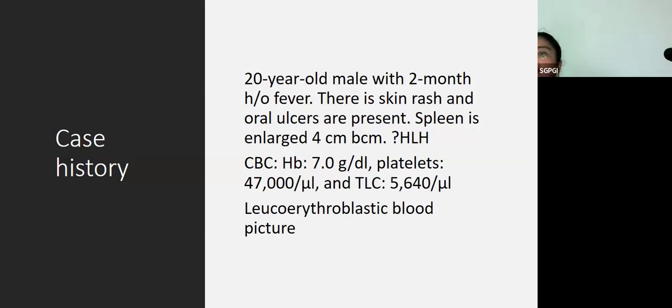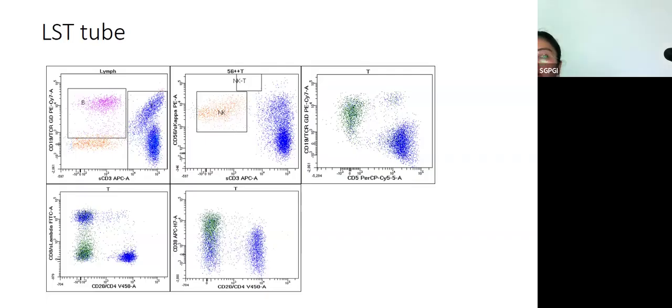Now this is the last case. This is a 20-year-old male. He has fever for 2 months. He has some skin rash which is non-erythematous. Oral ulcers are present, spleen is enlarged, and we get this bone marrow suspecting HLH. The peripheral smear shows a leukoerythroblastic blood picture. Patient has bicytopenia. On this plot, this is the lymphoid screening tube. If you have a look at the tube, CD19 versus CD3, you have your B cells nicely. You have your T cells. And what are these cells? The gamma delta T cells. They appear to be increased in number and they appear to be more than usual. The other gating strategy is we exclude the B cells and now we pick up the NKT cells. The minute we do that, we realize that the gamma delta cells are CD56 positive cells.